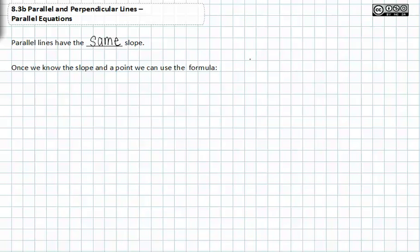Once we know the slope and a point, we can use the formula y equals mx plus b, or the slope-intercept equation. Let's go ahead and try to find an equation of a line in the examples below.